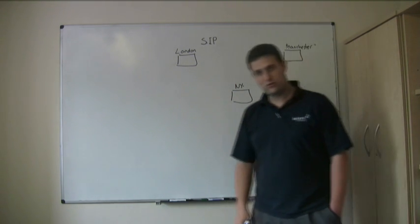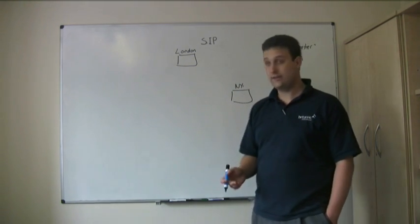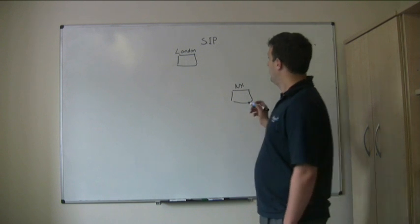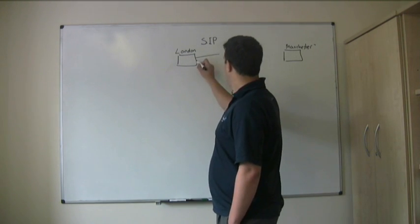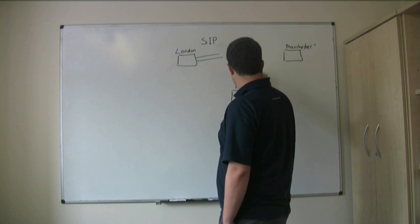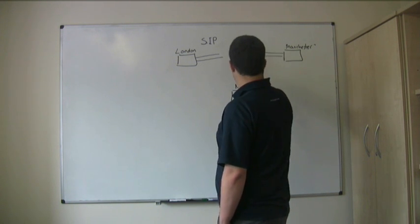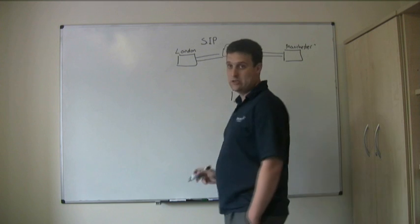Now, using the traditional model of ISDN or analog lines, the provider would need to ensure that there were enough lines going to each of these locations, to different providers, so that they could talk to each other.